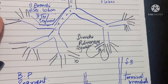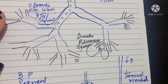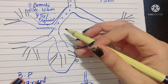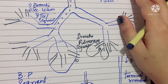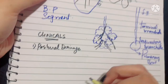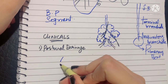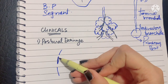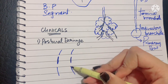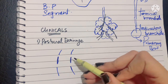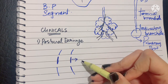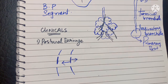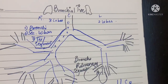Regarding which bronchopulmonary segment is most likely involved with a foreign body: if the person is supine, the superior bronchopulmonary segment of the lower lobe will be involved; if the patient is standing, the posterior basal segment of the lower lobe will be affected. Flail chest occurs when three or more continuous ribs are broken. During inspiration, the flail segment moves inward, and during expiration it moves outward — this is known as paradoxical respiration.